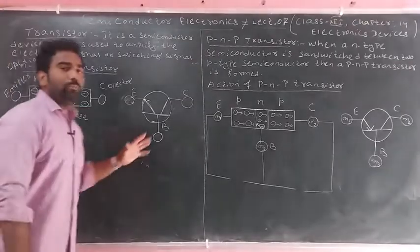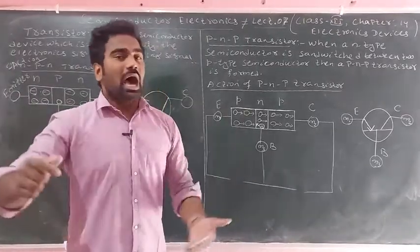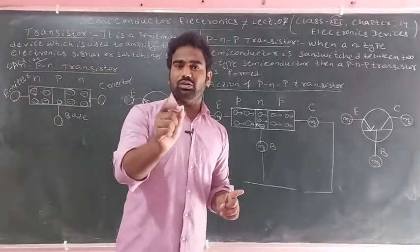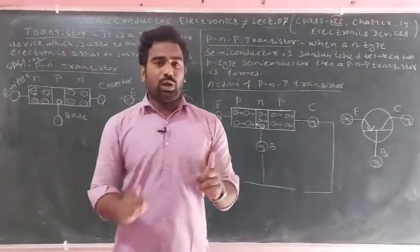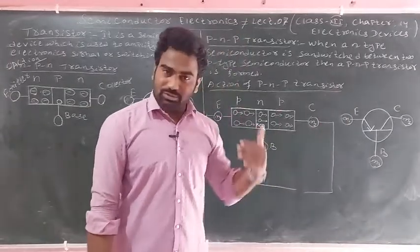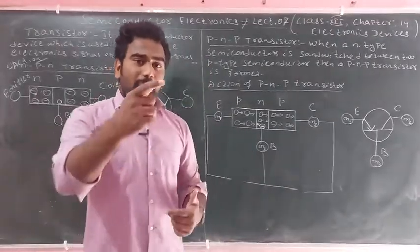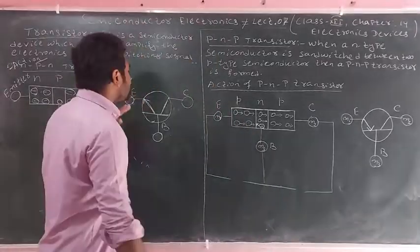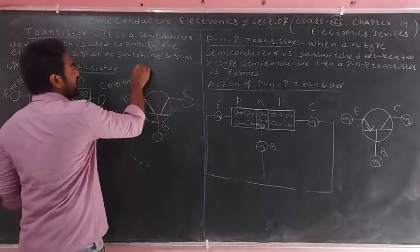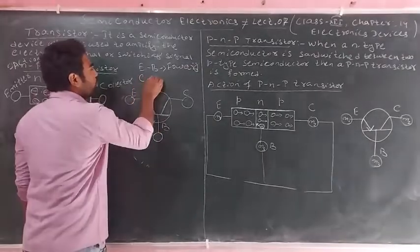Referring back to Lecture Number 4 on biasing: forward biasing occurs when the P-type semiconductor is connected to the positive terminal of the battery and the N-type to the negative terminal. Reverse biasing occurs when the P-type semiconductor is connected to the negative terminal and the N-type to the positive terminal. In transistor action, the emitter-base junction is forward biased and the collector-base junction is reverse biased.